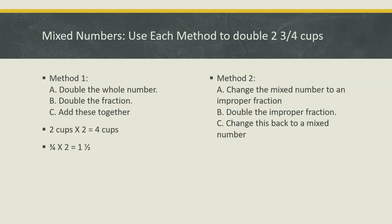So two cups doubled was four cups. Three-fourths cups doubled is one and a half cups. Now I'll add them together. Four cups plus one and a half cups equals five and a half cups.